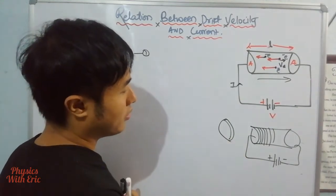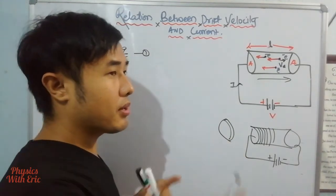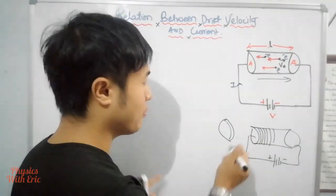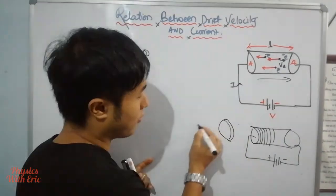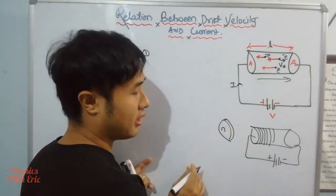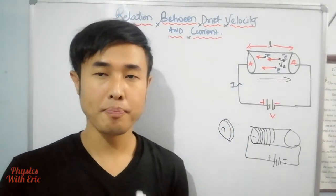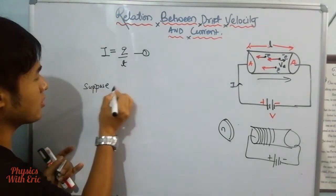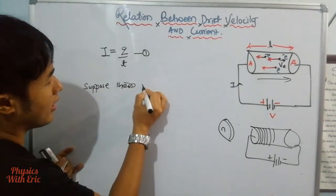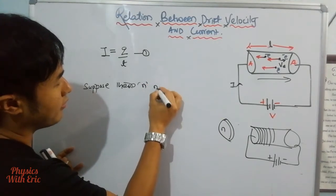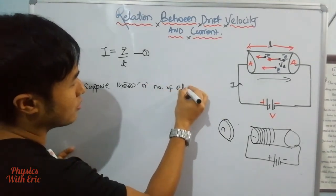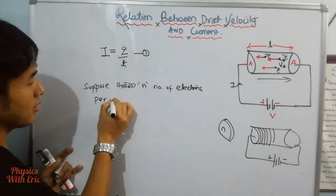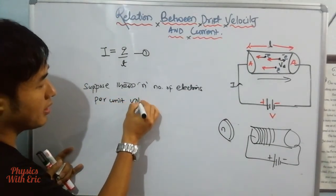Suppose there are n number of electrons per unit volume of the conductor. So suppose there is a number of electrons per unit volume.